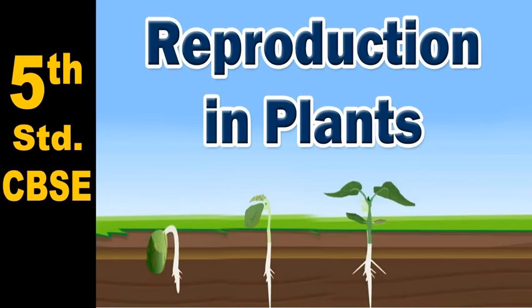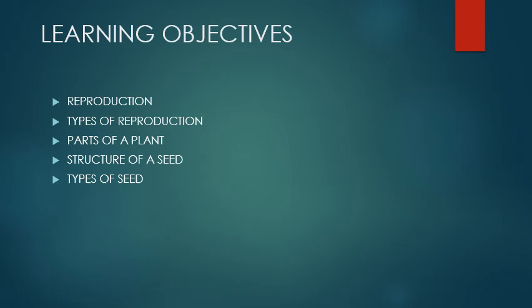I have divided this chapter into short segments and we will study these segments accordingly. The things which we are going to study in the first segment of this chapter are reproduction, types of reproduction, parts of a plant, structure of a seed and types of seed.